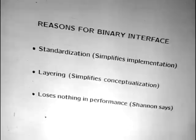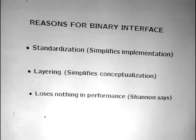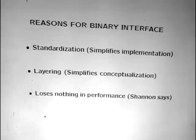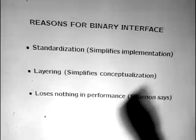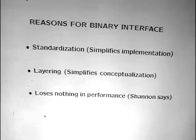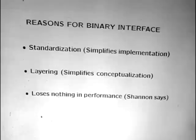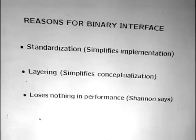One reason for the binary interface is standardization, which simplifies implementation. If you have 10 different kinds of channel coding and 10 different kinds of source coding with a binary interface, you need to develop 20 different things. Without that standardization, you need 100 different things — matching every kind of source with every kind of destination. That raises the price of chips enormously, since chip cost is roughly development cost divided by the number stamped out.